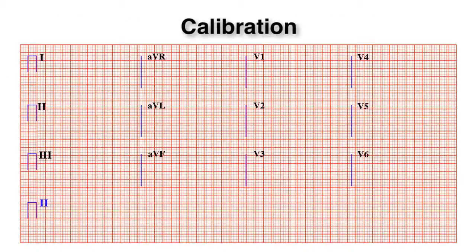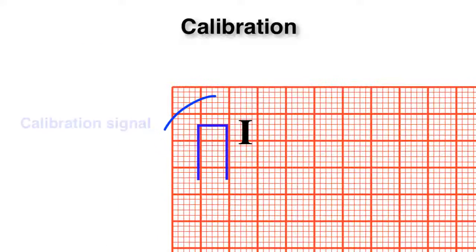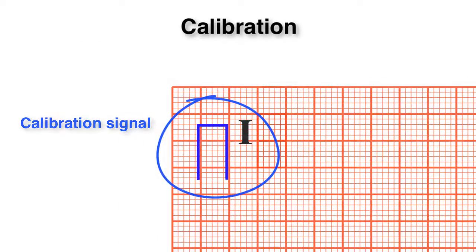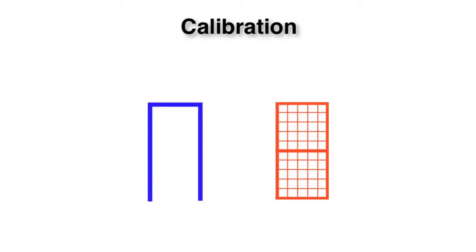And finally, just a little word on calibration. A standardization mark or calibration signal can be seen on every EKG. The EKG must be properly calibrated so that a 1 millivolt signal produces a 10 millimeter deflection.